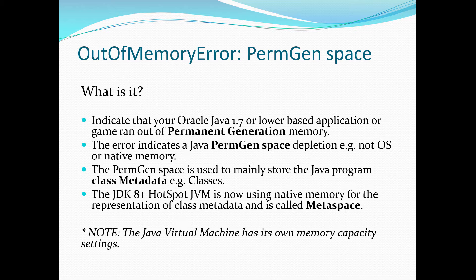So what is the OutOfMemory PermGen Space? Essentially, that indicates that your Java 1.7 or lower ran out of permanent generation memory. It's a very specific problem — that's why I mentioned 1.7 — because this error won't be seen on the latest Java version 1.8 and higher. It indicates depletion of the PermGen Space, not native memory, not to be confused with running out of physical RAM or even a Java heap itself.